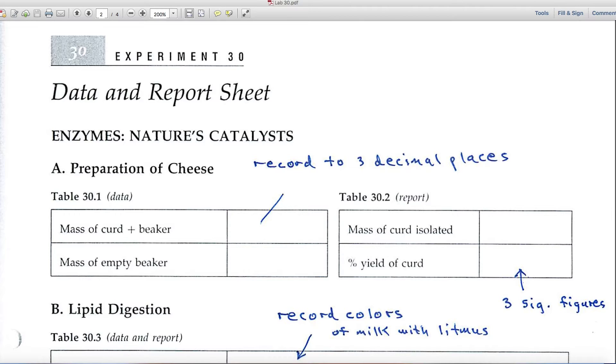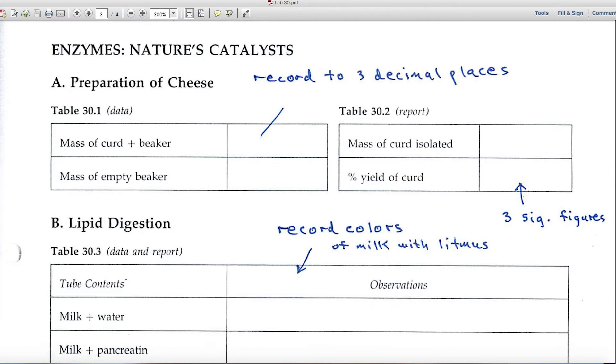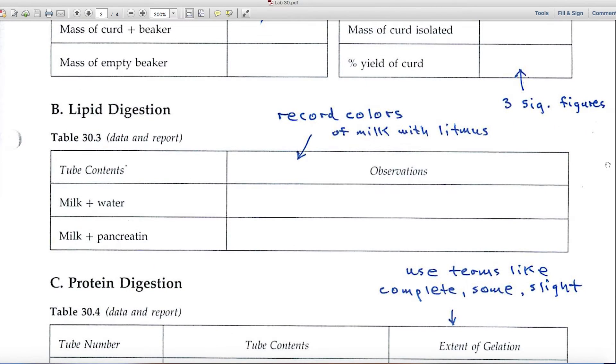And when it comes to calculating the percent yield, I would like you to present that number in three significant figures. So up here, three decimal places, but over here I've changed the terminology a little bit: three significant figures. So be careful with that step.